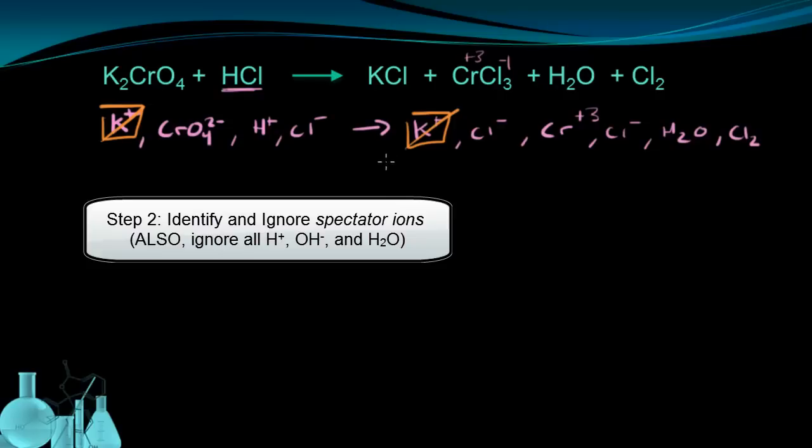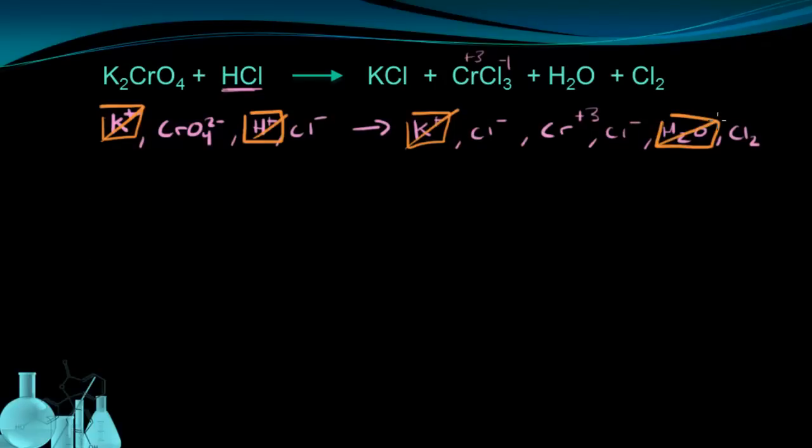We'll also ignore any hydrogen ions, hydroxide ions, or water molecules. So hydrogen, water, and there are no hydroxides. These are all going to be ignored. Everything left over is going to be represented in my half reactions. The CrO4 is going to be related to this chromium plus three ion. And the Cl-minus on the left side, even though it's not oxidized to form these Cl-minuses, it is oxidized to get this diatomic chlorine. So I've been able to eliminate everything except four species. And those are going to make my half reactions from.